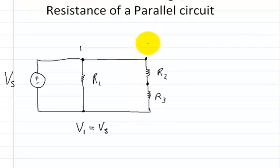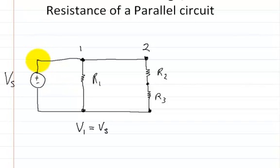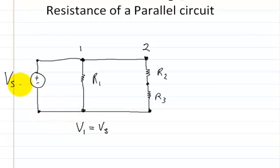This over here is the second branch. This branch from here to here has the same exact voltage as branch 1, which is the exact same voltage of the supply. If you have a voltmeter and you put your positive lead anywhere up here and anywhere down here, you're going to get the exact same voltage as this supply, because it's a property of branches in parallel.